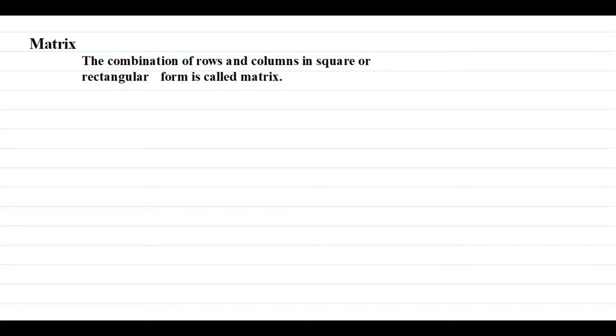Bismillahir Rahmanir Rahim, starting with the name of Allah which is specially merciful and entirely merciful. Today we will discuss about matrix. The definition of matrix is: the combination of rows and columns in a square or rectangular form is called a matrix.